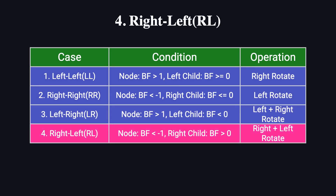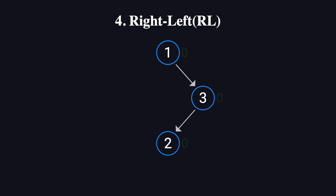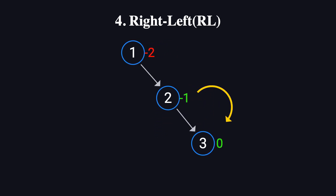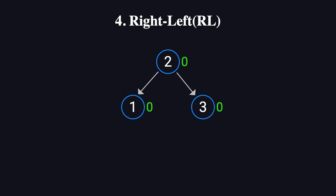Finally, we have the RL, or right-left case, which is the mirror image of LR. The conditions and rotation logic are symmetric but in the opposite direction. For instance, if we insert the values 1, 3, and 2, the tree becomes unbalanced because the right child of the root has a left-heavy subtree. To fix this, we perform a right rotation on node 3, followed by a left rotation on node 1. After these rotations, the tree is balanced again.